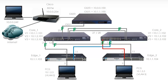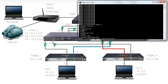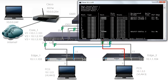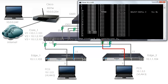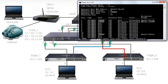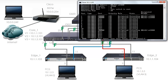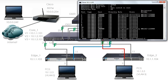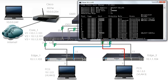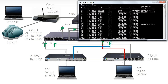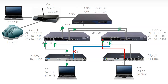Let's have a look at Edge 1. Show spanning tree. You can see that it's blocking on port 11. If we look at instance 1, notice it's blocking on port 11. But if we look at instance 2, it is forwarding on port 11. With multiple spanning tree you need to look at individual instances. On instance 1, port 1 and 2 are forwarding and port 11 is blocking. That's the topology for instance 1.